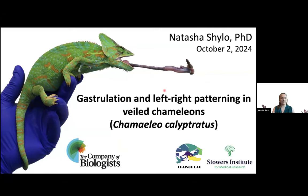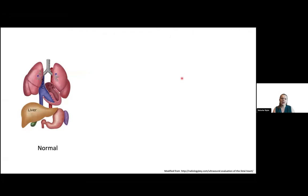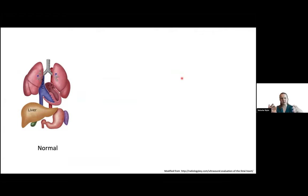So why do we care about left-right patterning? It turns out we're actually pretty asymmetrical. Our internal organs are quite asymmetrical — we have a different number of lung lobes on different sides, our heart is on the left side, the stomach is on the left side, the liver is on the right. And it's really important that the organs are positioned that way in relation to each other.